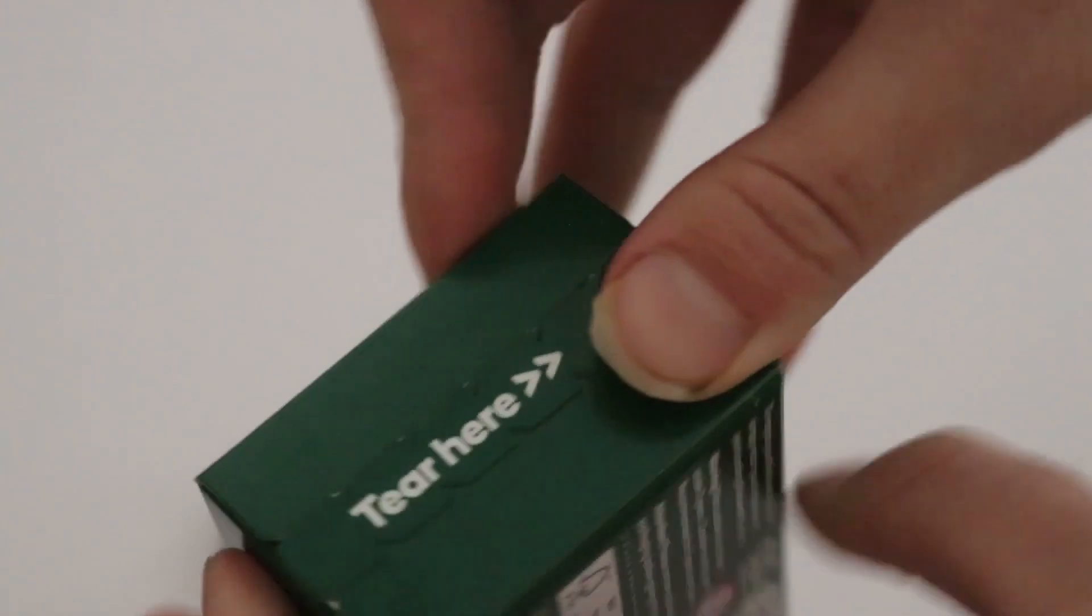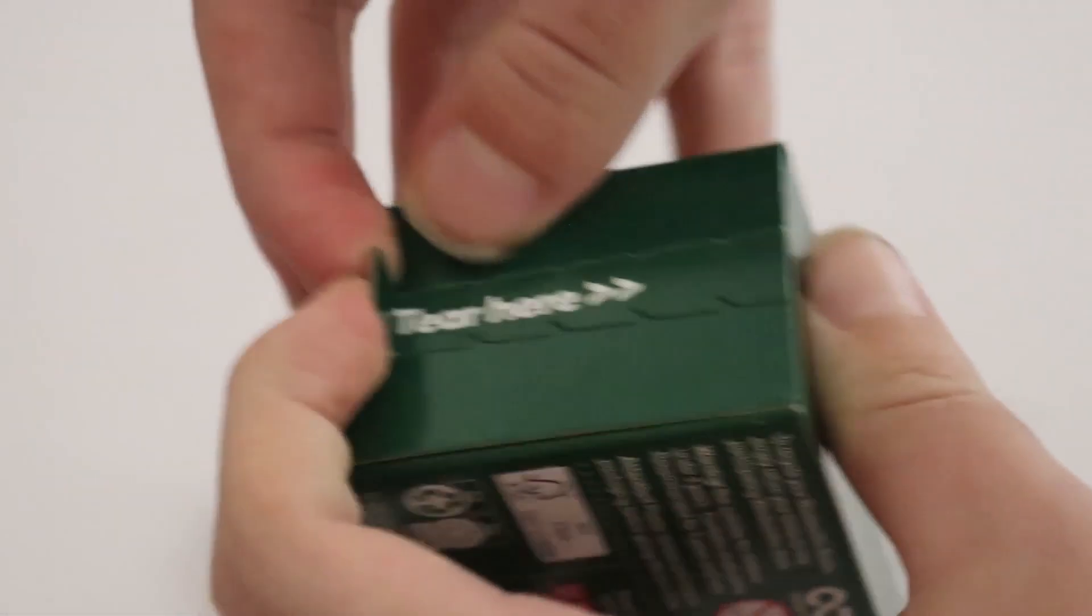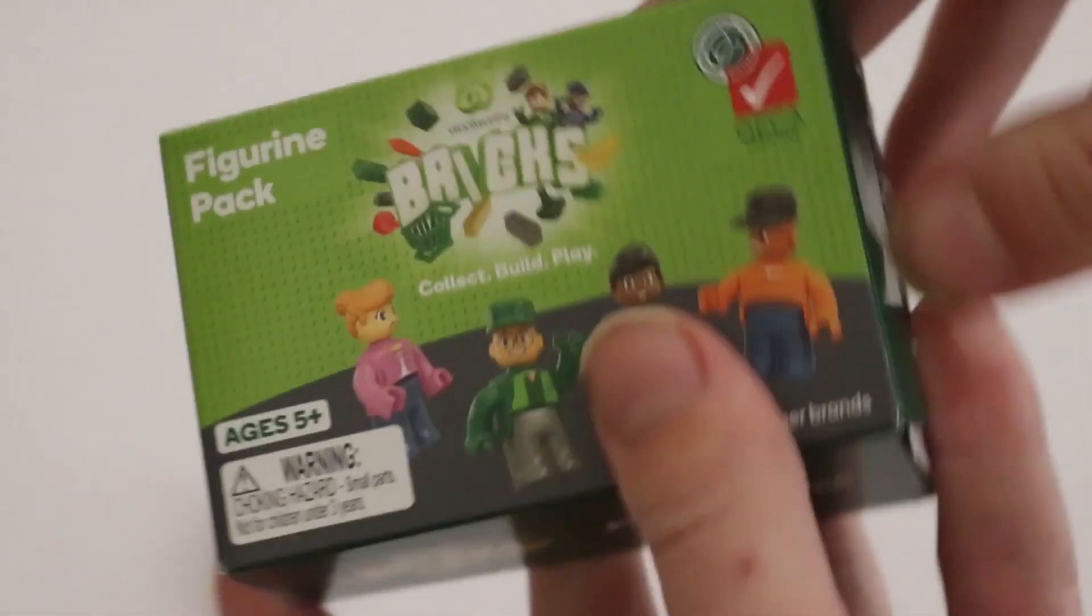Okay, we go from this side I believe. Let's open it up. It's kind of like a Lego haul but it's not really Lego, it's basically Woolies Bricks, a cheaper version of Lego basically.